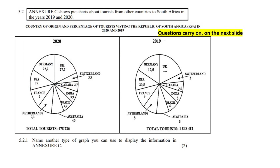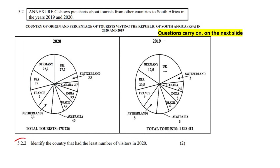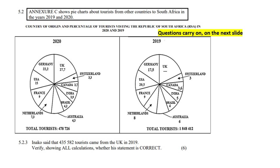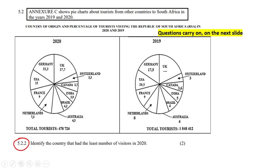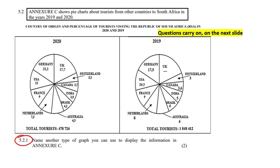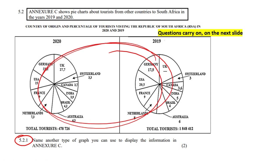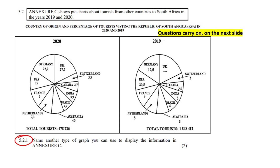This question is going to come in parts — five questions total. The first part says Anakshasi, which is this pie chart, showing tourists from other countries to South Africa in 2019 and 2020.